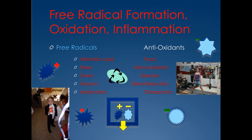Free radicals get formed in reactions in our body from stress, toxins, chemicals, traumas, injuries, medications, and exposures to different things. They form at a tremendously high rate, they build up, they float around the system, and they cause damage.